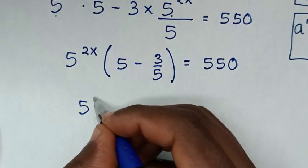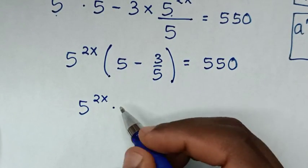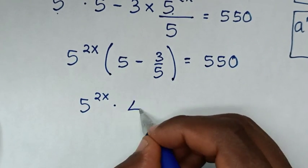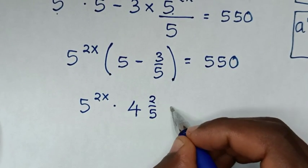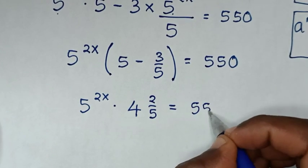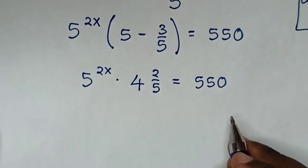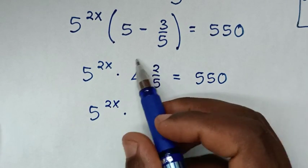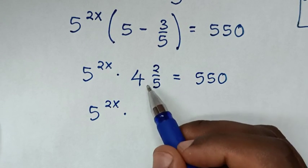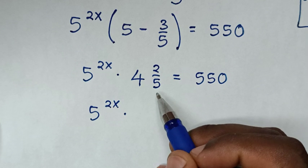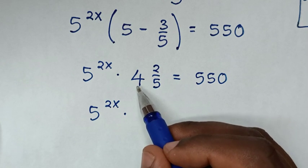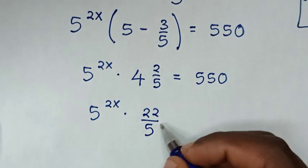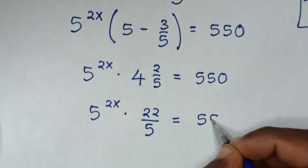Then it will be 5 power 2x times 5 minus 3 over 5, which is 4 and 2 over 5, equal to 550. We make this in the form of an improper fraction, so it will be 5 times 4 is 20, 20 plus 2 is 22, over 5, equal to 550.